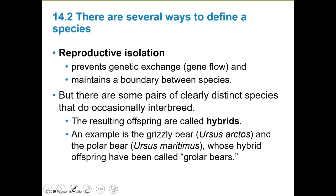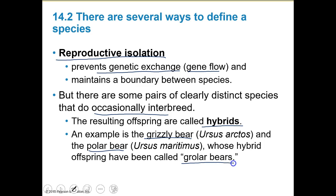There are several ways we can go about this, but there is reproductive isolation — things that prevent genetic exchange or gene flow and maintain the boundaries between species. However, there are some pairs of clearly distinct species that do occasionally interbreed. Sometimes we get these things called hybrids. For example, when a grizzly bear and a polar bear — two different species — mate, they make these things called pizzly bears.